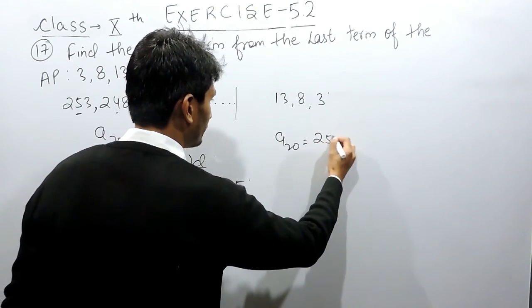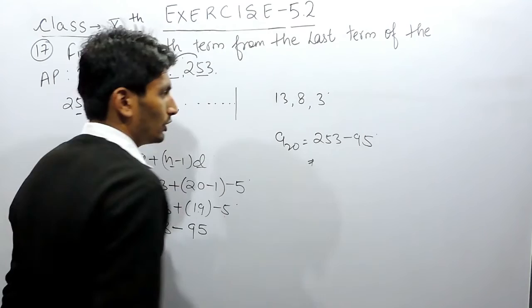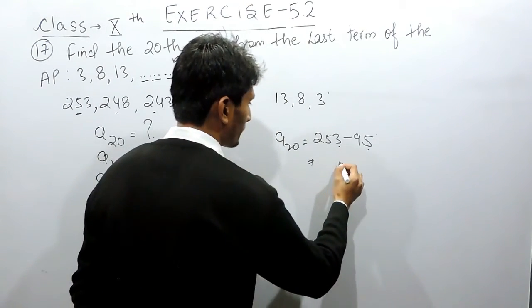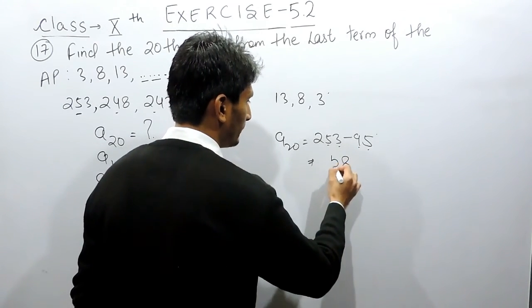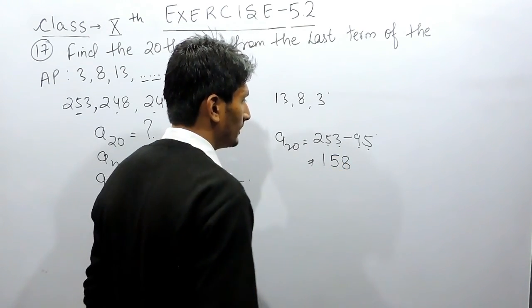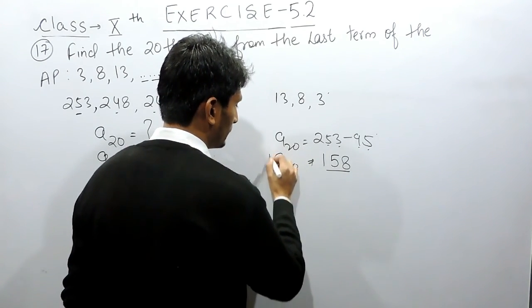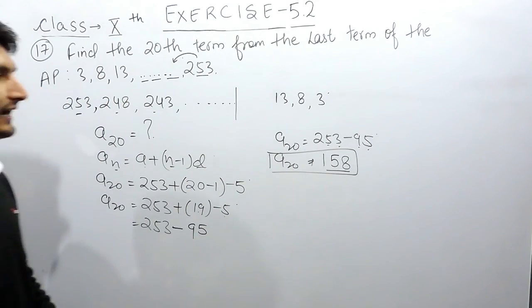For that, 13 minus 5 will be 8, 14 minus 9 will be 5, and this will be 158. So the 20th term starting from the end will be equal to 158.